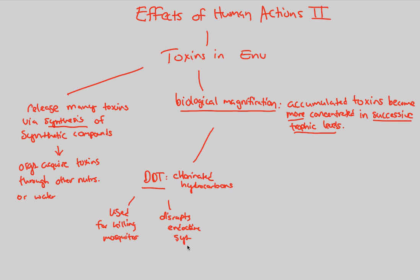DDT can very easily disrupt our endocrine systems — which we'll learn about in Bio 1.16 — a hormonal system based off of endocrine glands. If we disrupt this, it results in a very big consequential process that Rachel Carson, an author, highlighted in her book called Silent Spring. It's a very important book that talks about the consequence of DDT — how every single spring, there was less and less bird calling, less and less bird songs.